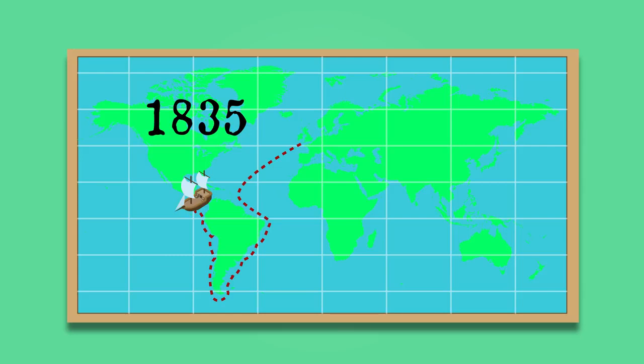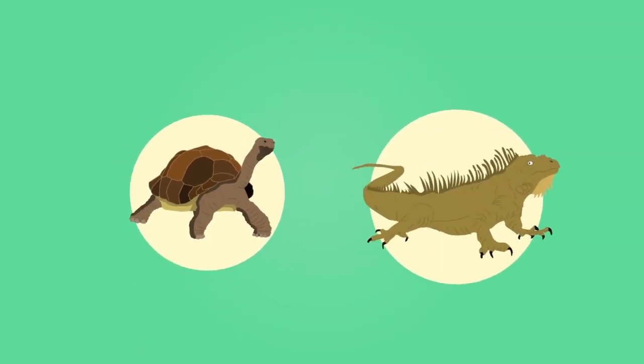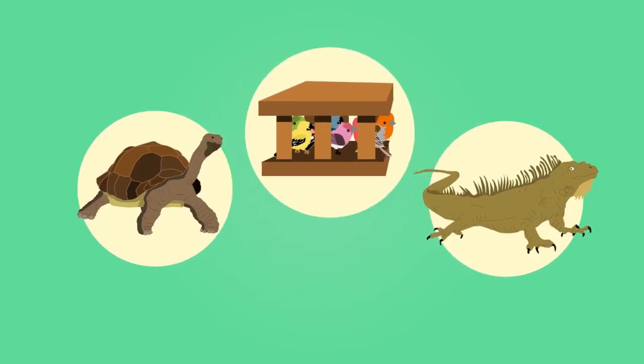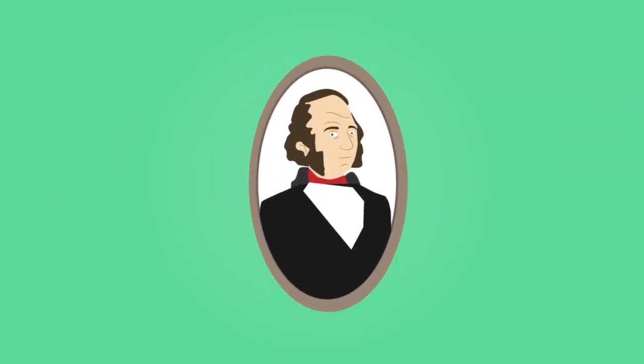What Darwin found there surprised him greatly. As well as giant tortoises and marine iguanas, Darwin collected and preserved a variety of different songbirds called finches. Upon returning to the UK, he examined them together with ornithologist John Gould and made some fascinating discoveries.